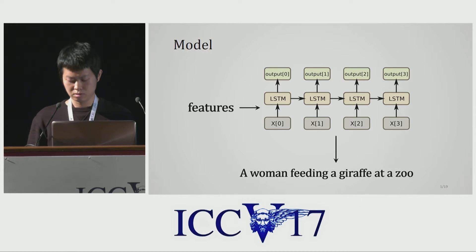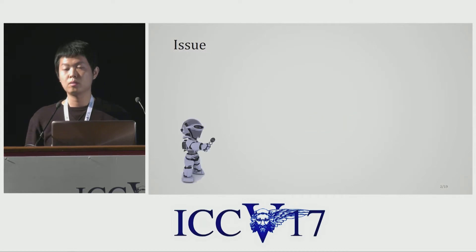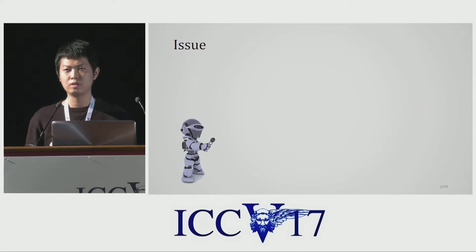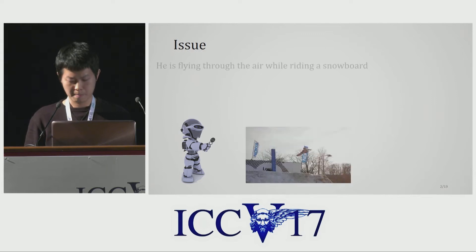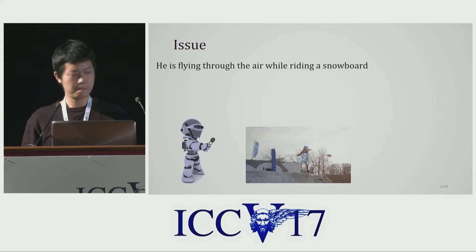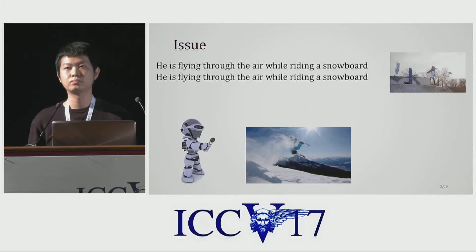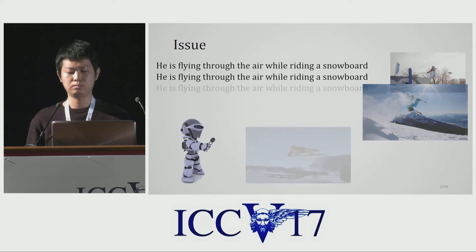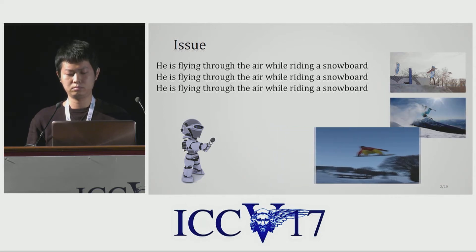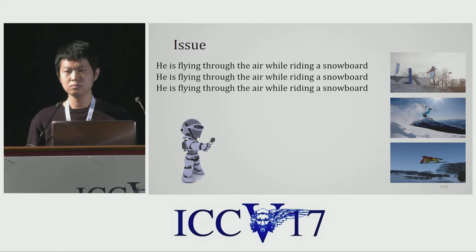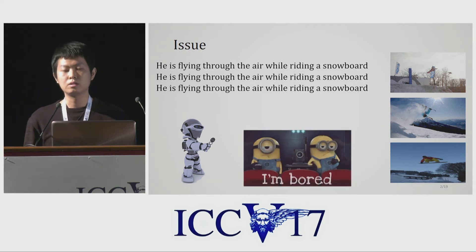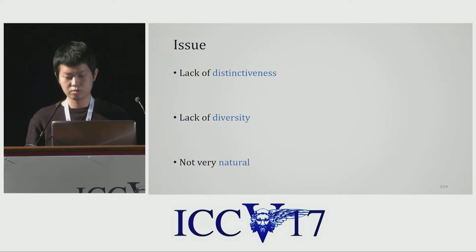However, there are problems. To show that, imagine a robot that can describe what it sees using state-of-the-art captioning models. Here is an example of it describing a snowboard game. The first player is flying through the air while riding a snowboard. The second player — flying through the air while riding a snowboard. The third player — flying through the air while riding a snowboard. As you can see, it tends to produce identical captions for similar images, which is dry and boring.